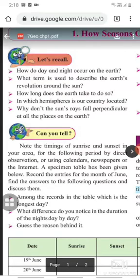In which hemisphere is our country located? And the last is: Why don't the Sun's rays fall perpendicular at all the places on Earth? These are the five questions which the book is asking you to recall.